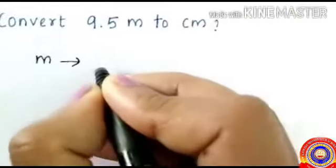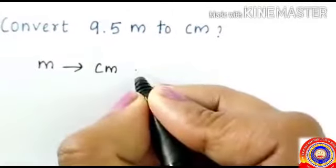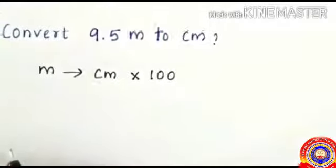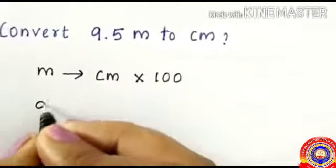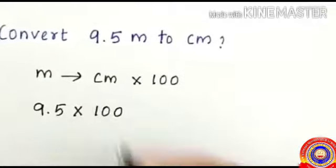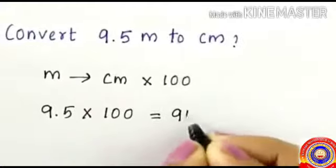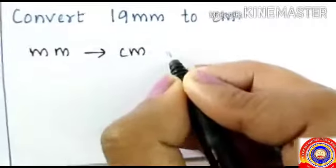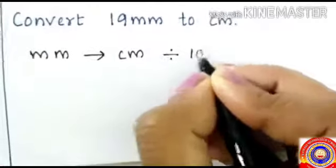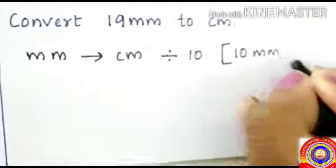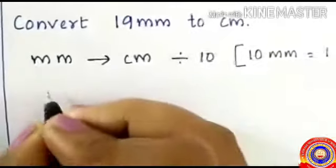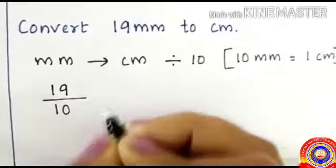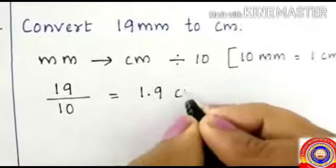Next question: convert nine point five meters to centimeters. To convert meter to centimeter, multiply by one hundred — nine point five into one hundred equals nine hundred and fifty centimeters.